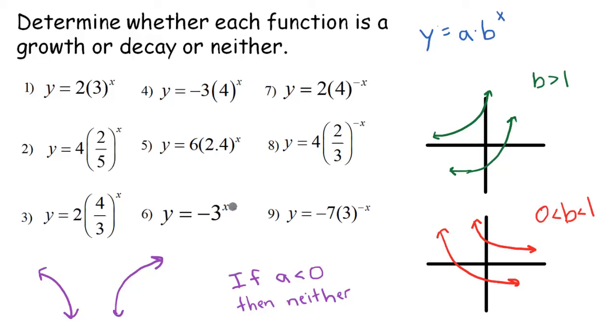Now, let's go through 1 through 9. Number 1, our b term is 3, which is greater than 1, so that reflects a growth. Number 2, our b term is 2 fifths, which is between 0 and 1, so that's going to be a decay. Number 3 is 4 thirds, it's greater than 1, so that's a growth.